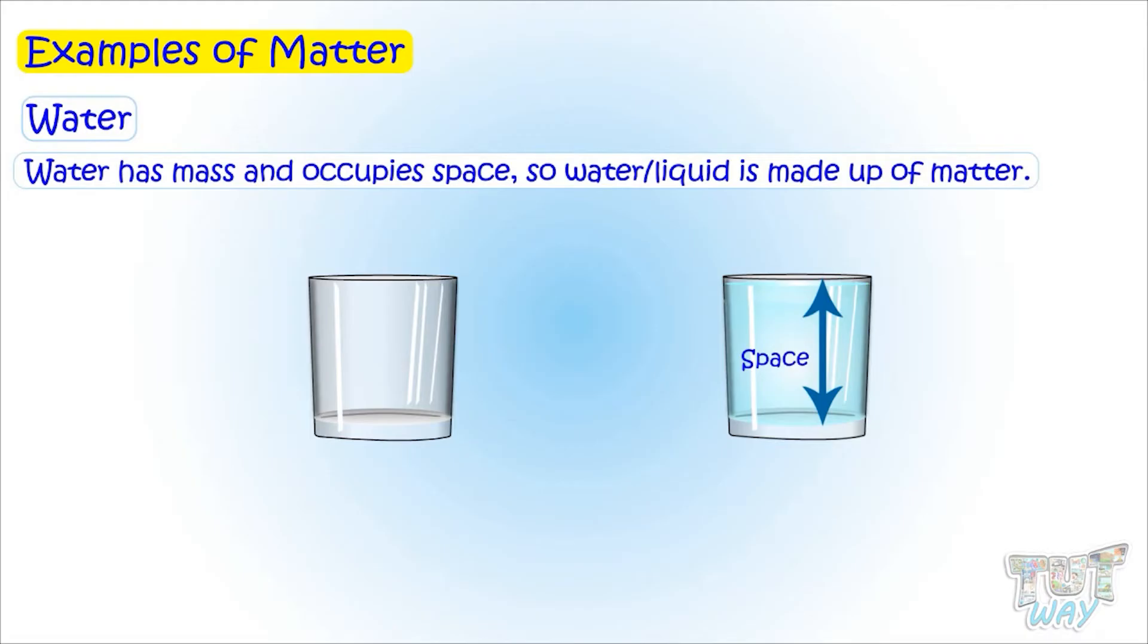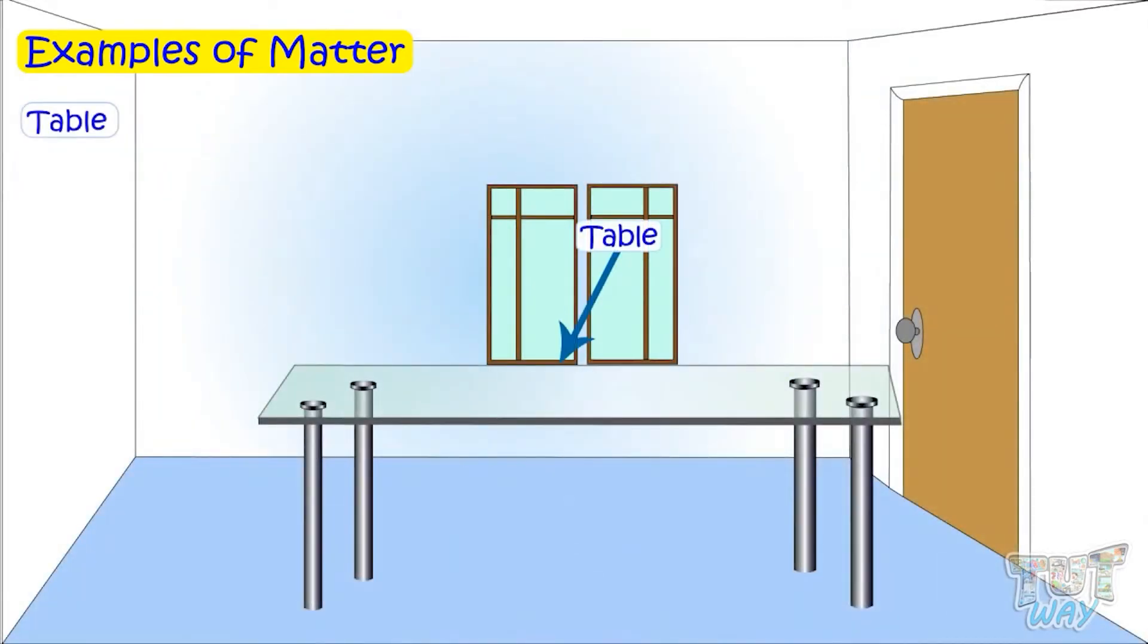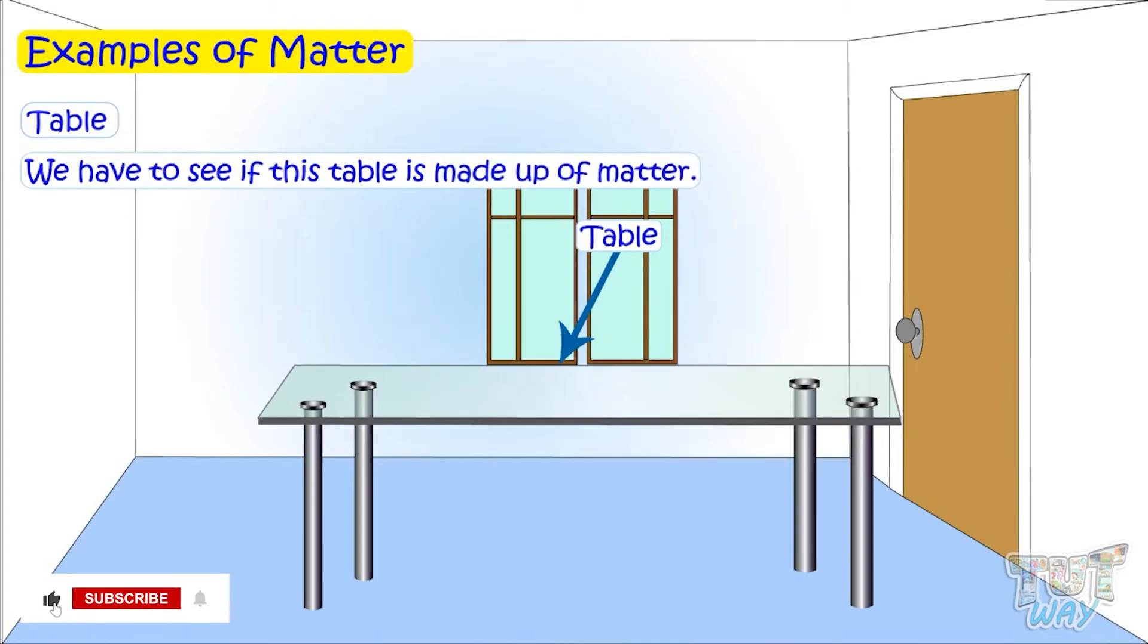Now here is another thing and it is a table. We have to see if this is made up of matter. And for that, we have to prove it has mass and it occupies space.